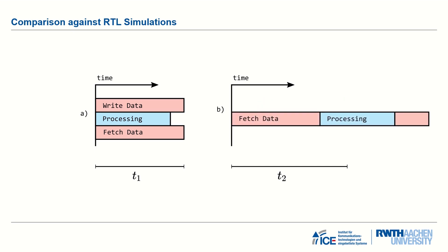The second reason is also a deviation from roofline model assumptions. We noticed cases where the NVDLA runs memory and compute tasks in serial rather than in parallel. This happens when the convolution buffer is not large enough to hold two kernel groups; instead of running in double-buffer mode, single-buffer mode is used, leading to inference times higher than estimated.